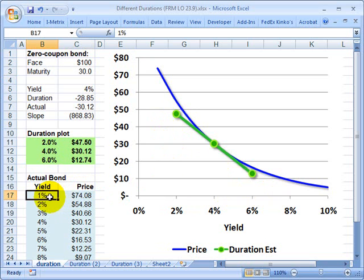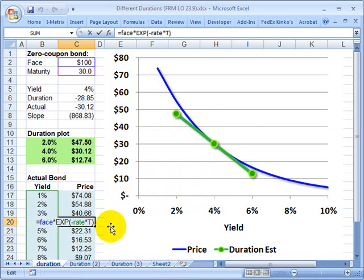Now, in lower left are the actual points on this curve, such that, for example, here, if I highlight the 4% yield, the price of the zero coupon bond is about $30. That's this point right here, 4% yield corresponds to $30 price.